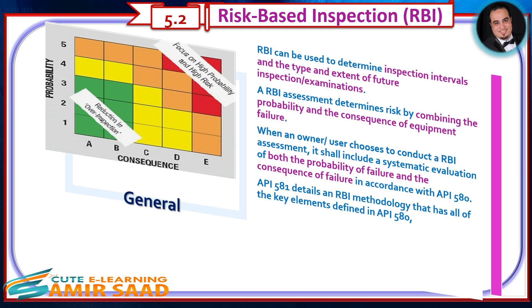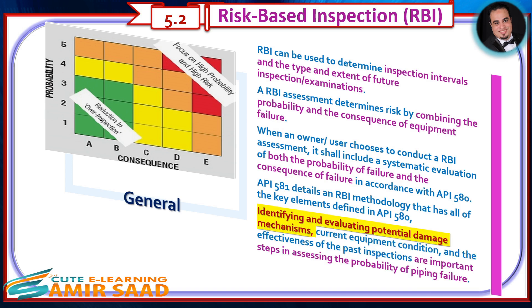API 581 details an RBI methodology that has all of the key elements defined in API 580. Identifying and evaluating potential damage mechanisms, current equipment condition, and the effectiveness of past inspections are important steps in assessing the probability of piping failure.